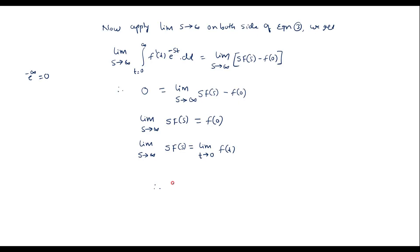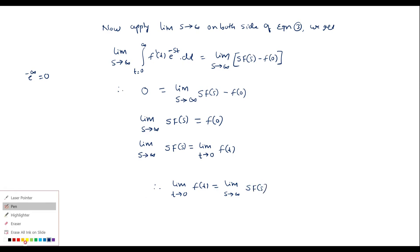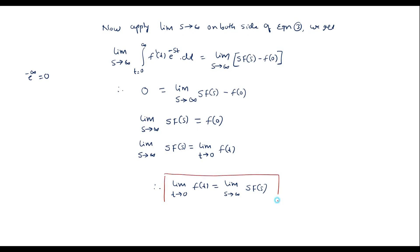Therefore, the limit as s tends to infinity of s·F(s) equals f(0), which we can also represent as the limit as t tends to 0 of f(t). Thus, the initial value theorem is proved.